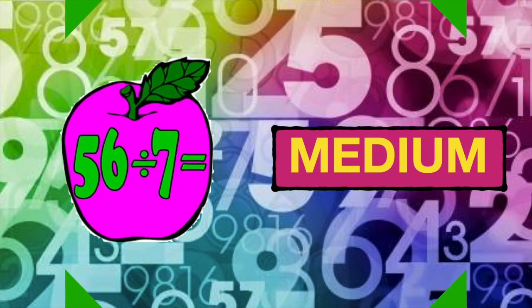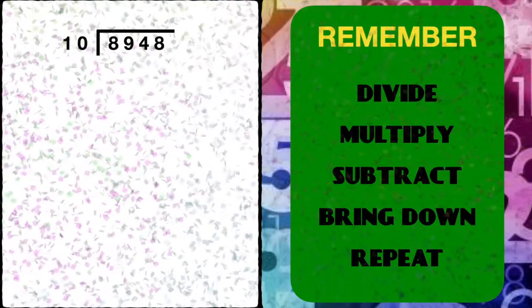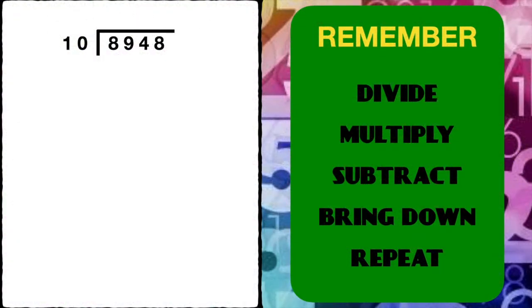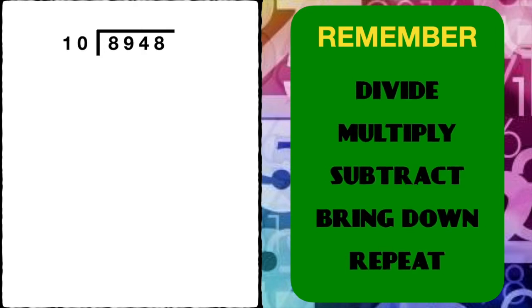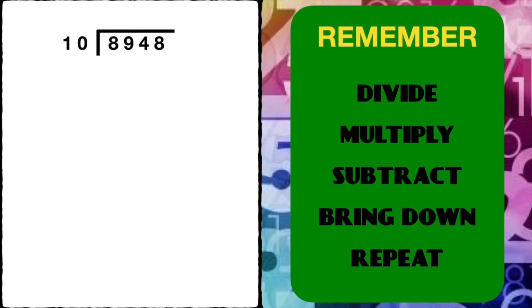Let's continue dividing, guys. We are going to try a more difficult division problem now. Let's take a look. We have 8,948, and we want to divide that by 10. Remember the steps of division as we go: divide, multiply, subtract, bring down, and repeat. Let's solve.